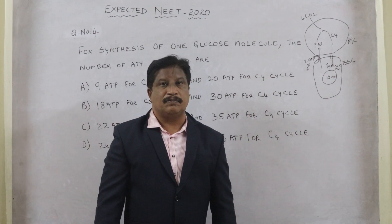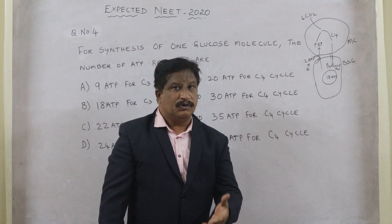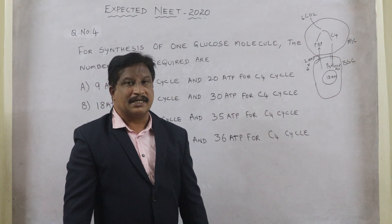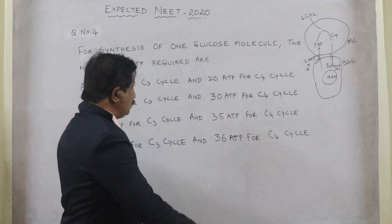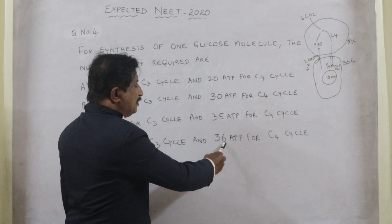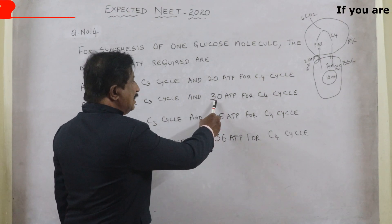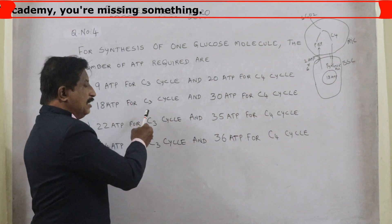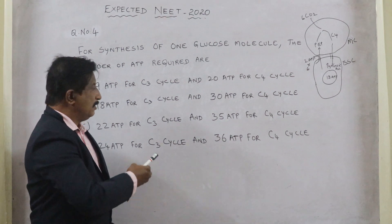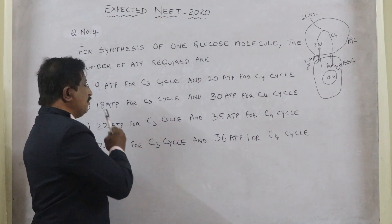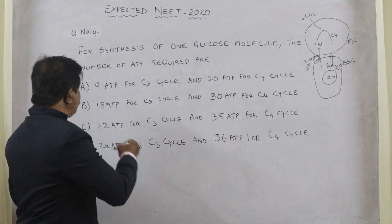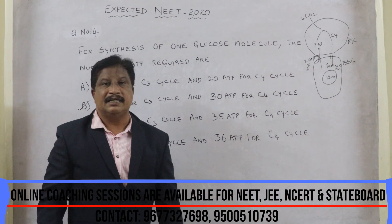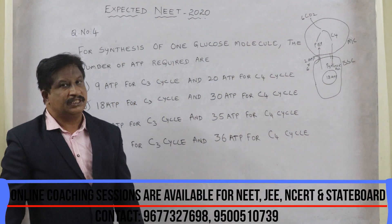Since 6 CO₂ molecules are involved in glucose formation, 6 × 2 = 12 additional ATPs are required, besides the 18 ATPs in the C3 cycle. So 18 + 12 = 30 ATPs are required in C4 plants like sorghum, maize, and sugarcane. In normal C3 plants like tomato and bell pepper, only 18 ATPs are required. The correct answer is option B: 18 ATPs for C3 cycle and 30 ATPs for C4 cycle.